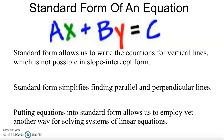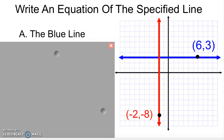Now we're going to be talking about standard form. Standard form is in the format of AX plus BY equals C. Standard form is really great to use for finding vertical and horizontal lines. Let's take a look at an example where we do that.